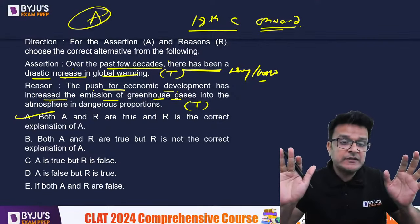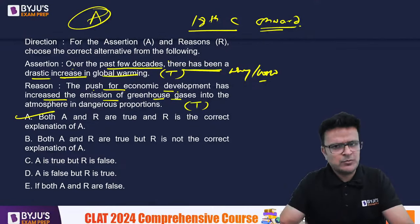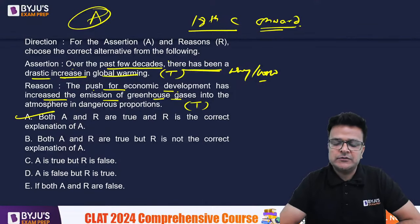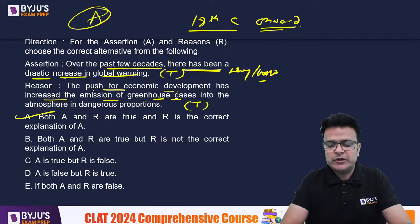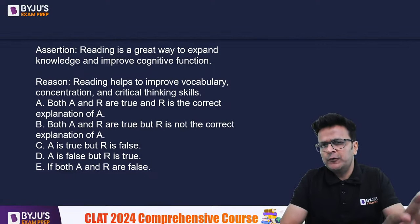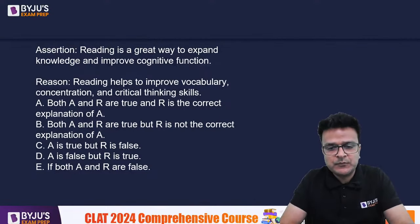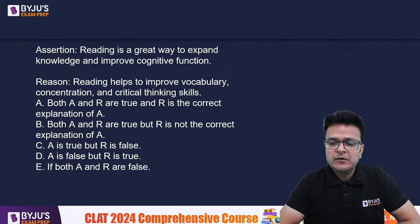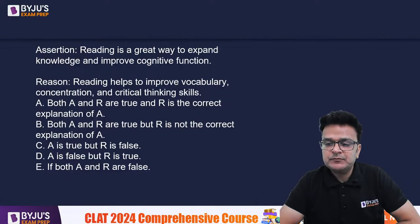I hope you understand where to mark A and where to mark B. If 'why' or 'how' is not answered by the reasoning, don't mark A at all. Mark B if both are true but the reason does not explain the assertion. If they are not true, then you can mark C, D or whatever option is available.